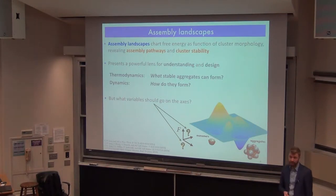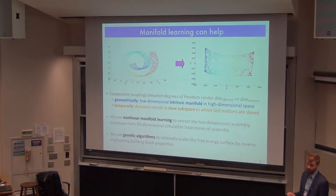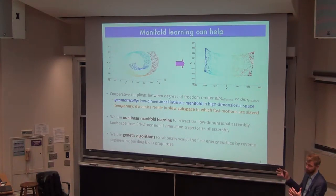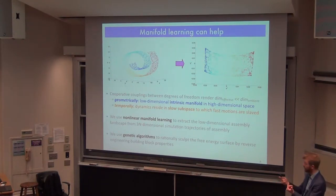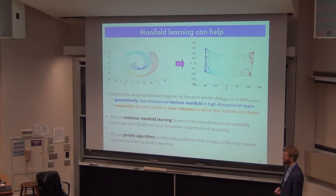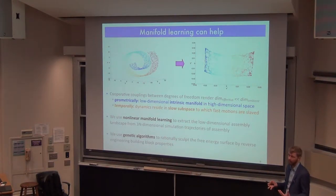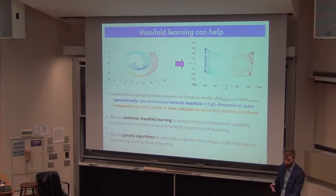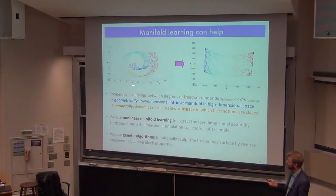One way of finding good variables is to use ideas from machine learning, specifically manifold learning. If you have a high-dimensional phase space — the coordinates of all building blocks rotating and translating through space — that's a very high-dimensional dataset. But because there are couplings between degrees of freedom, the effective dimensionality is much lower than the ambient dimensionality. There's some low-dimensional emergent simplicity. Geometrically, we can think of this as a low-dimensional intrinsic manifold living in a high-dimensional space.